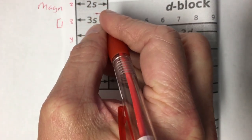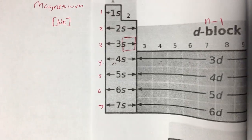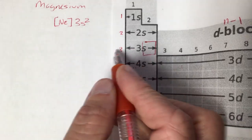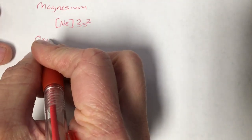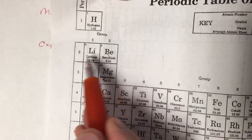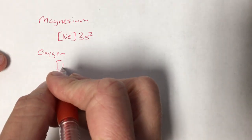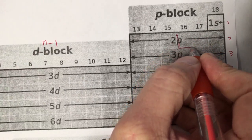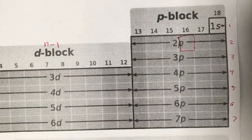Let's do the condensed electron configuration for magnesium. First, figure out the noble gas: magnesium is 12, so we work backwards — 12, 11, 10 — and neon is the previous noble gas, so we put neon in brackets. For the rest, magnesium is in period 3 in the S block, so we add two more electrons in 3S2. That is the condensed configuration for magnesium.